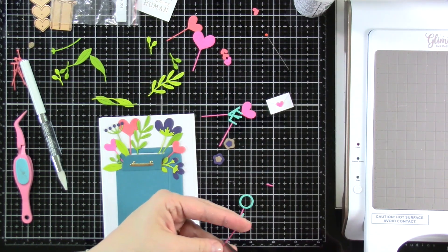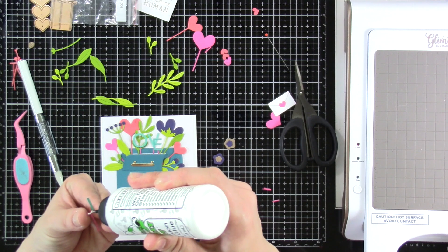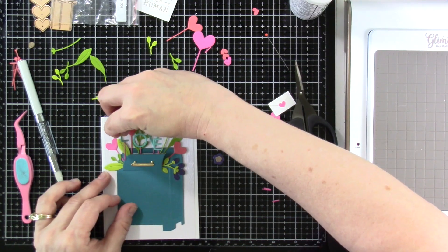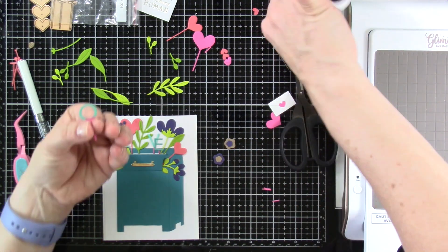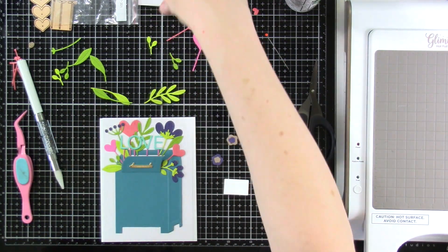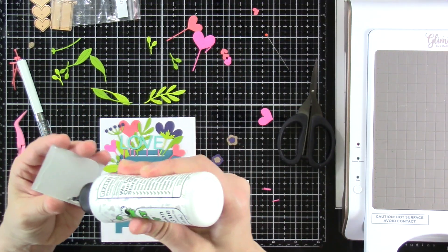I decided to trim down these pieces just a little bit because I didn't want them to go up too high. So now that I've kind of centered those in there, I'm going to glue those in. And then for our little post, we're going to use a foam square, but I went ahead and glued down my sentiment first.